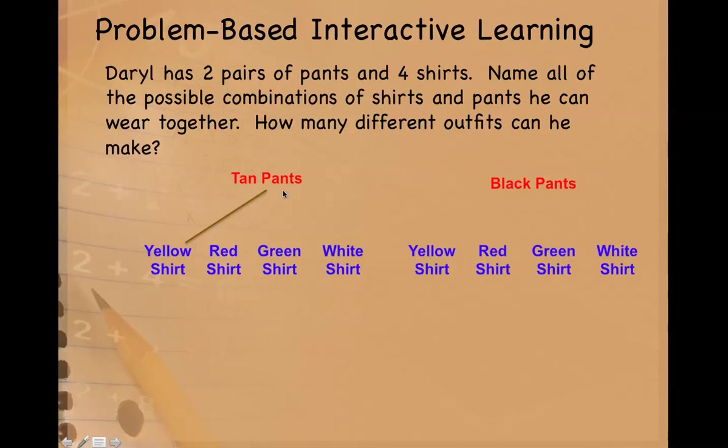Next I'm going to pair up the tan pants with the next shirt. Now I will pair up those tan pants with the green shirt. Every time I change the shirt I have a new outfit. Here I have four different outfits.